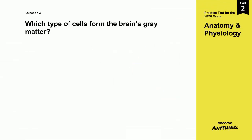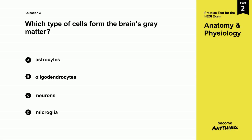Question 3. Which type of cells form the brain's gray matter? A. Astrocytes. B. Oligodendrocytes. C. Neurons. D. Microglia.